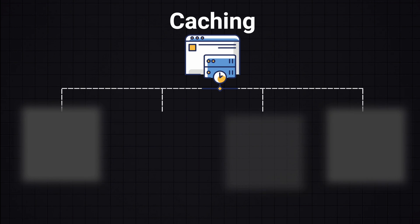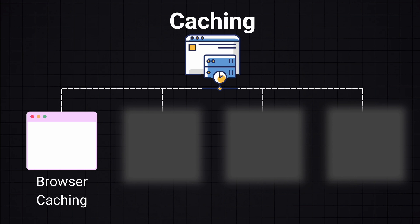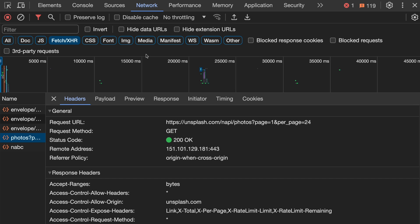There are 4 common places where cache can be stored. The first one is browser caching, where we store website resources on a user's local computer. So when a user revisits a site, the browser can load the site from the local cache rather than fetching everything from the server again. Users can disable caching by adjusting the browser settings.